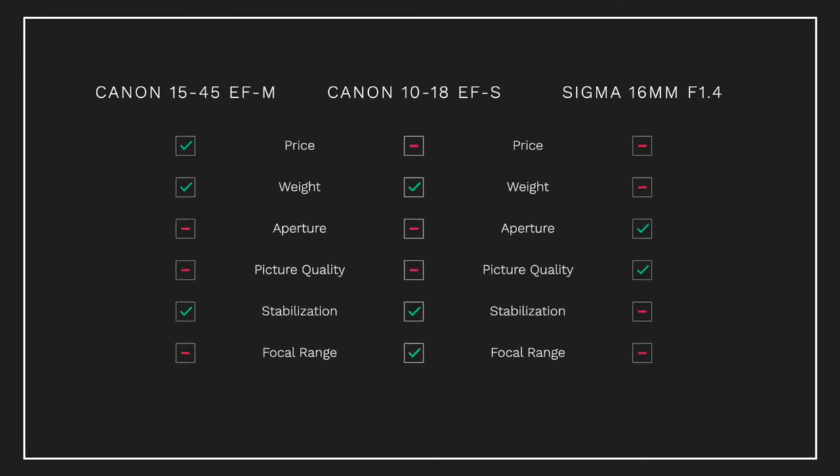The Sigma 16 millimeter f/1.4 just has a crisper, sharper look — colors are more vivid. The drawback is no stabilization, though turning on the camera's digital stabilization should help. It also weighs 405 grams, significantly more than the other two lenses. However, that's offset by the fact that it's made from premium materials and just feels right in your hand.